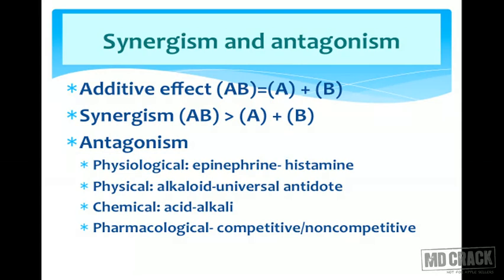When two drugs are given together, they can either work together — called synergism — or oppose each other — called antagonism. Synergism has two types: the first is additive effect, where there is arithmetic addition of the individual effects, so the effect of the combination equals effect of A plus effect of B.